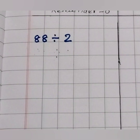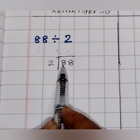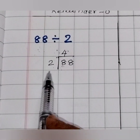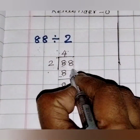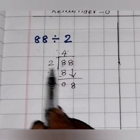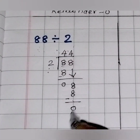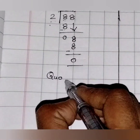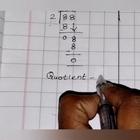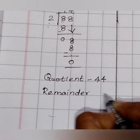Our next question is 88 divide by 2. Look at the first digit of the dividend — it is 8, and 2 is smaller than 8, so we are going to take 8 alone. 2 fours are 8. 8 minus 8 is 0. Bring the 8 down. 2 fours are 8. Always write the numbers straight while doing division, otherwise you will make mistakes. The quotient is 44 and the remainder is 0.